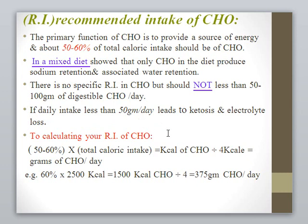To calculate the recommended carbohydrate intake: multiply 50 to 60% by the total calorie intake, then divide by 4, since each gram of carbohydrate provides 4 kilocalories. For example, 60% of 2,500 kilocalories divided by 4 equals 375 grams per day. For fat, it should not exceed 30% of total energy. Multiply 30% by total calorie intake and divide by 9, since each gram of fat provides 9 kilocalories. For 2,500 kilocalories, 30% equals 750 kilocalories divided by 9 equals 83 grams of fat per day.